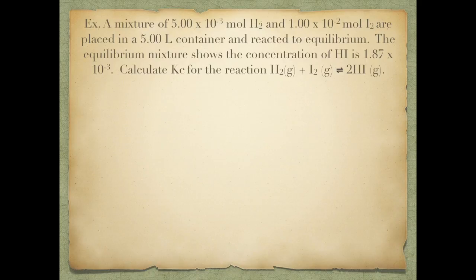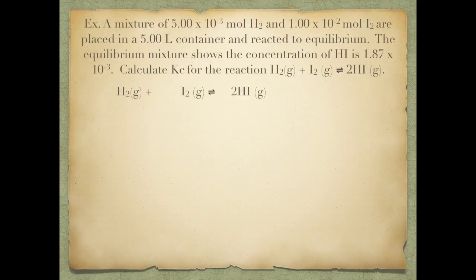I'm going to provide you with an example and explain as I go. Here you've got a reaction: hydrogen gas reacting with iodine to produce hydroiodic acid. It tells me that my initial number of moles of hydrogen gas are 5.00 times 10 to the negative third, and of iodine is 1.00 times 10 to the negative second, and I'm in a five-liter container, so I can easily calculate the concentration for these two reactants.